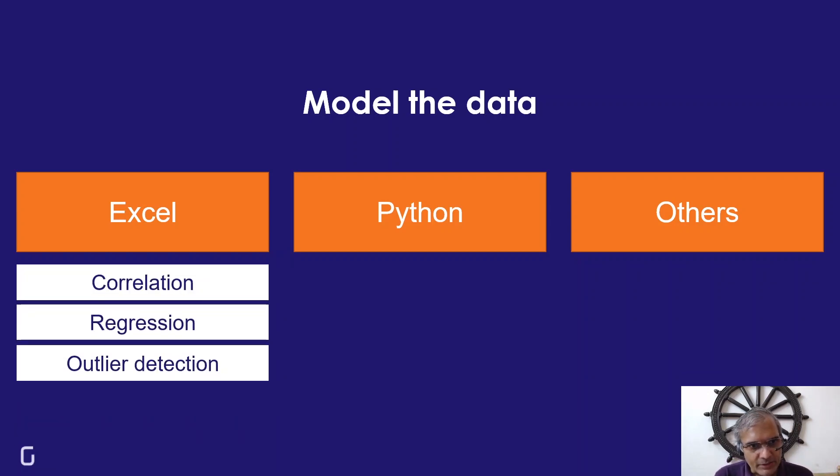We'll start with Excel, where we'll be looking at correlation, regression, and outlier detection.